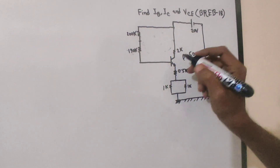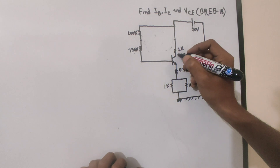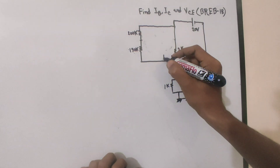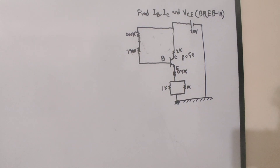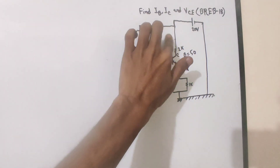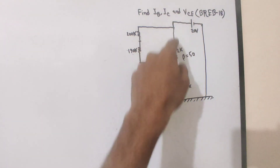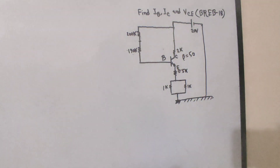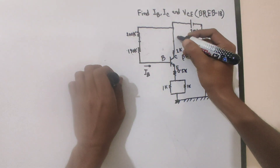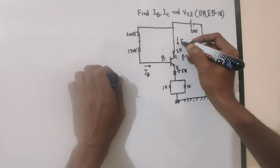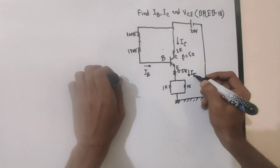This is an NPN transistor. The positive terminal is connected, and dividing accordingly. That means collector, emitter, and base are identified. In active mode, the input side is forward biased and we solve for base current iB and collector current iC.